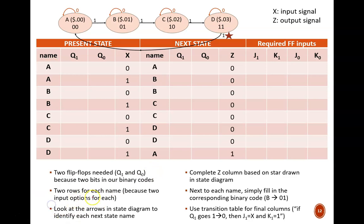Also notice I filled in the Z column. This is the output signal, or whether or not the gumball chute should open. Our state diagram only has a star next to the 1 leaving state D, so that is the only cell with a high value.